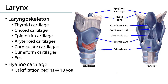There are three major unpaired cartilaginous elements. These include the thyroid cartilage, the epiglottic cartilage, and the cricoid cartilage.